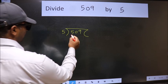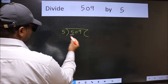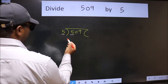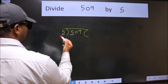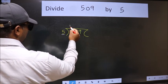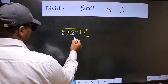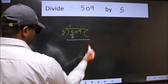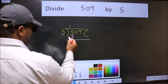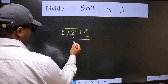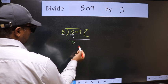Here we have 5, and here also 5. When do we get 5 in the 5 table? 5 once is 5. Now we should subtract, and we get 0.